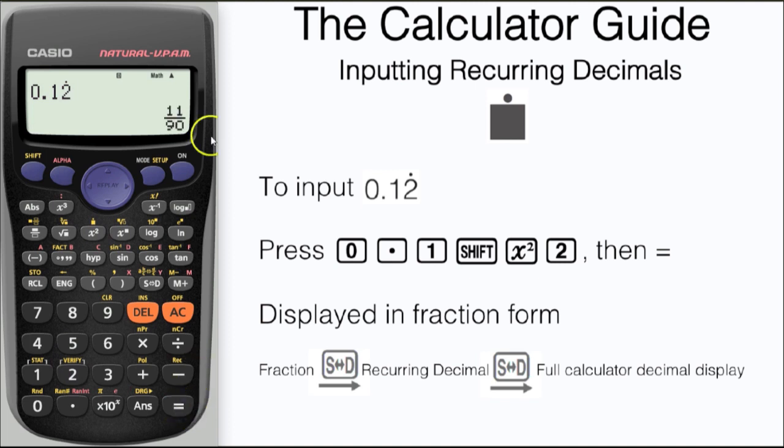Here we have our answer of 11/9th as a fraction. To change between the fraction and decimal version, we'll press the SD button. Here we have our recurrence, and here we have our full calculator display: 0.1 with a recurring 2.